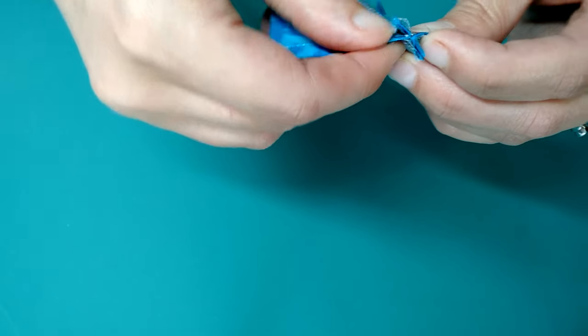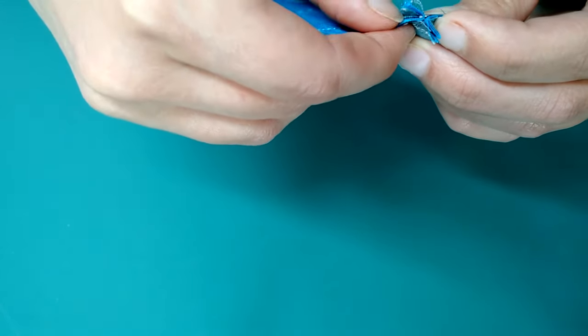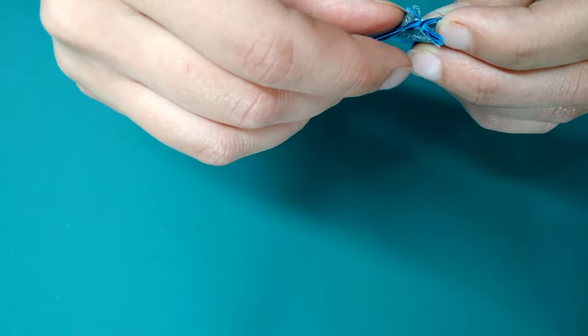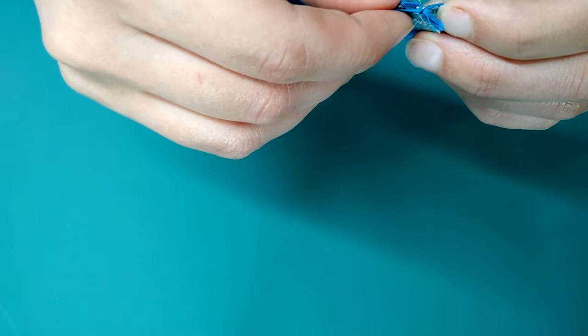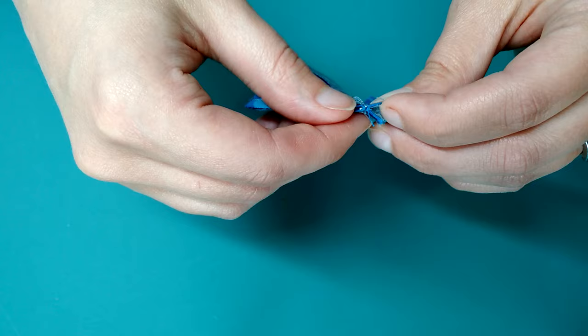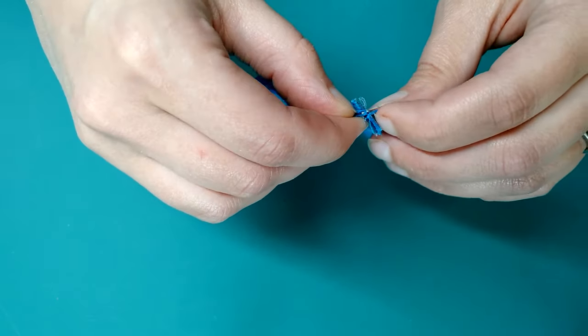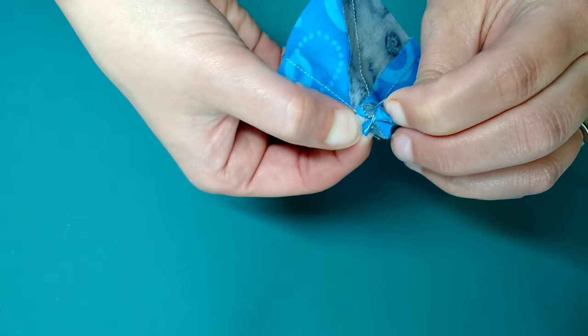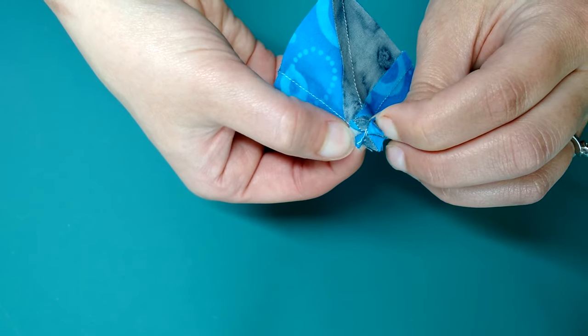Same thing on the other side. I'm going to slip my fingers inside the little flap of fabric. What this allows me to do is pull and my seam comes right apart.